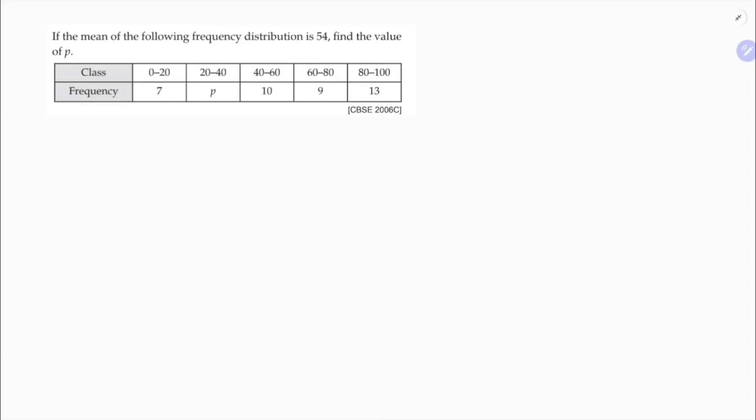If the mean of the following frequency distribution is 54, find the value of p. So here the class and frequency, so 0 to 20, the classes are like 0 to 20, 20 to 40,